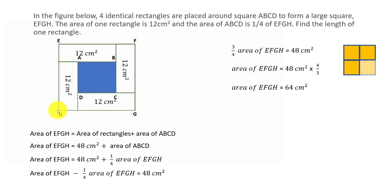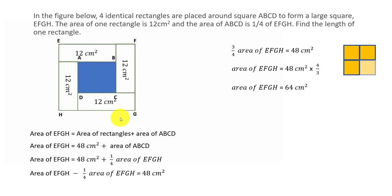Our objective is to find the length of one rectangle, but first, since we know the area of EFGH is 64 cm² and it's a square, length equals breadth. The square root of 64 is 8, since 8 times 8 equals 64. So the total side length of EFGH is 8 cm.